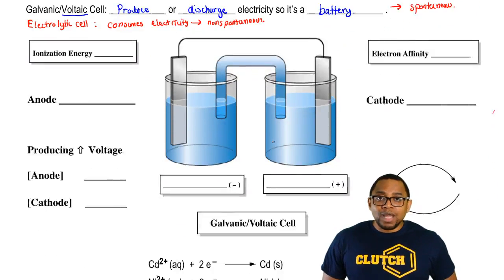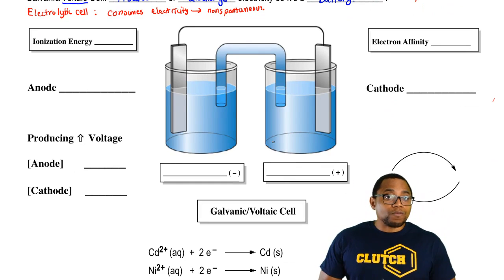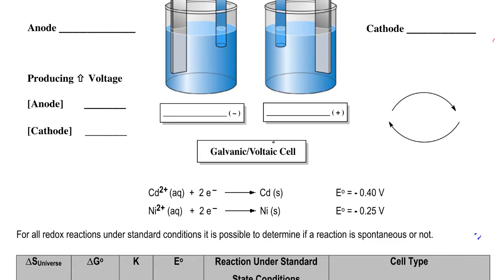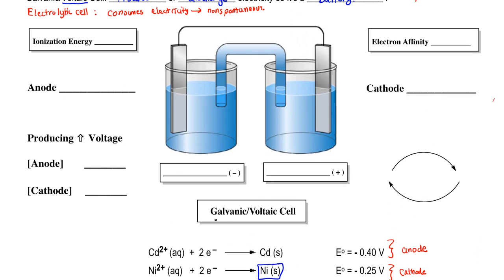Here we have an example of a basic galvanic or voltaic cell based on these two equations. The larger your E value, reduction is more likely to occur, so it's the cathode. The smaller your cell potential, the more likely oxidation occurs, so it's the anode. Based on these two equations, the nickel solid is our cathode — in a galvanic or voltaic cell, the positive electrode is the cathode. Cadmium solid represents the anode, and the anode is negative.